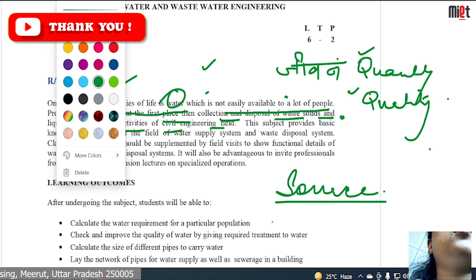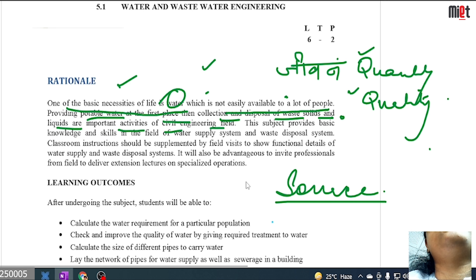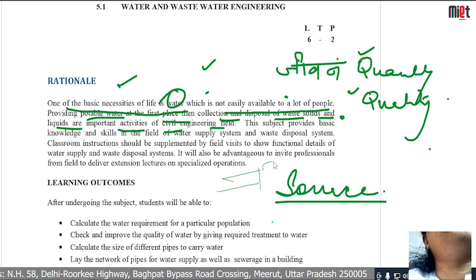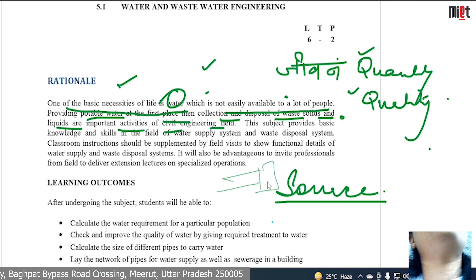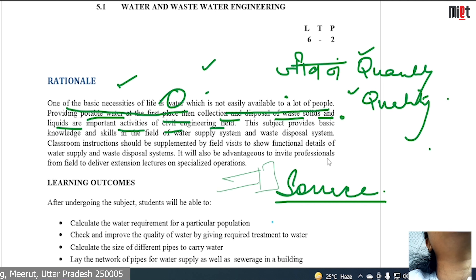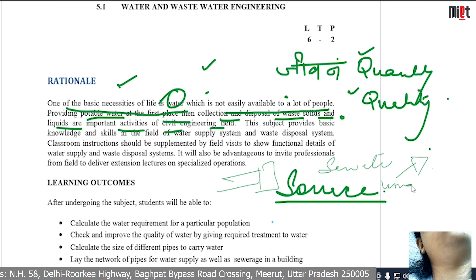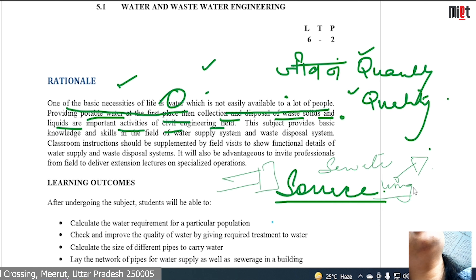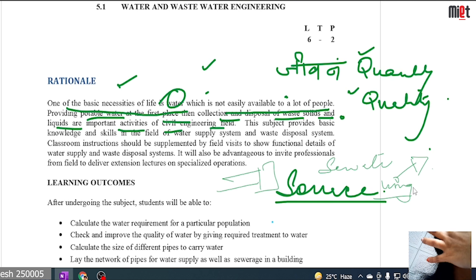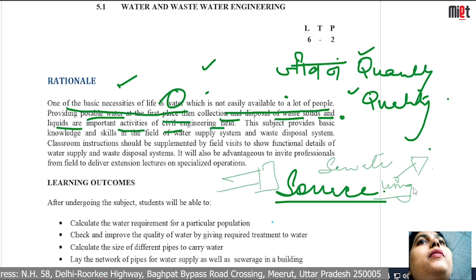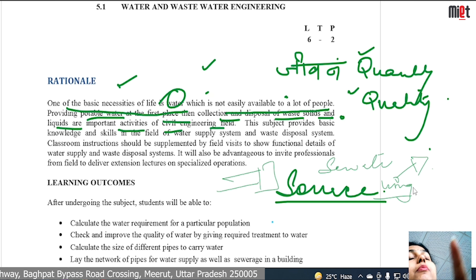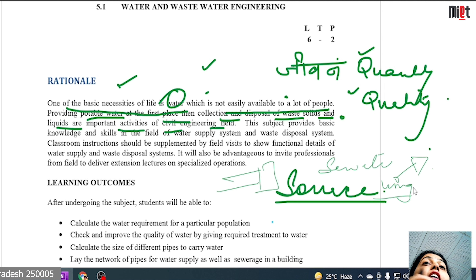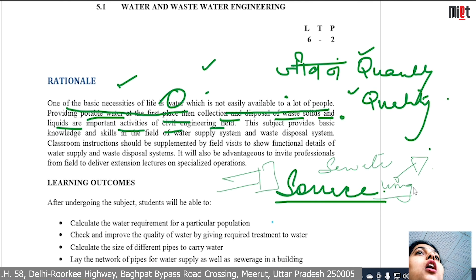As an engineer, when we take water from a source, we focus on the required quality, quantity, and supply system. When people use the water supply system and then dispose of the used water with a treatment process, we release the treated water back — so we do not pollute the source or our environment.